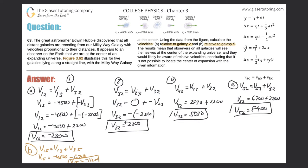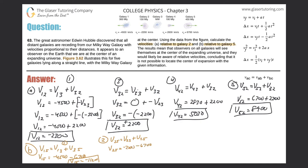For galaxy 2 relative to 5: velocity of 2 relative to 5 equals velocity of 2 relative to 3 plus velocity of 3 relative to 5. Notice we get the same second term each time. So that's negative 2200 minus 6700, giving negative 8900.